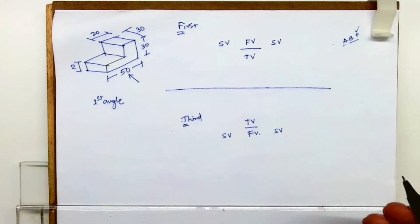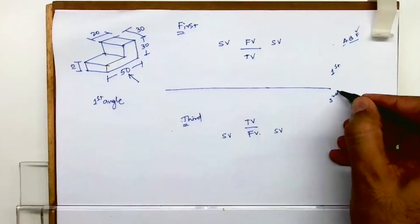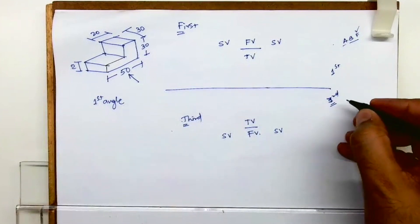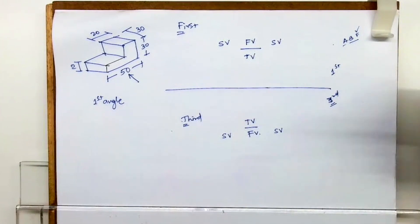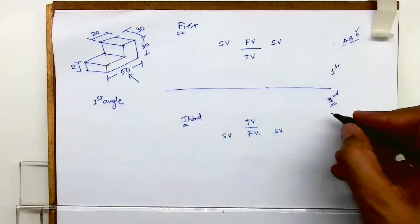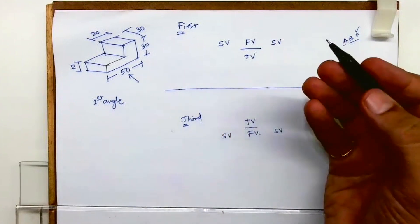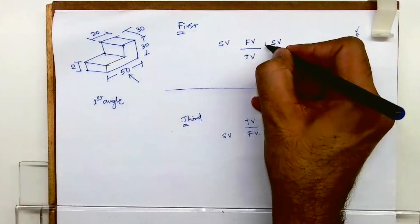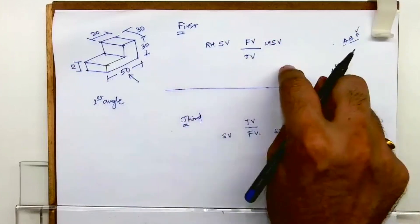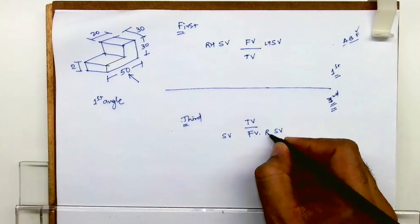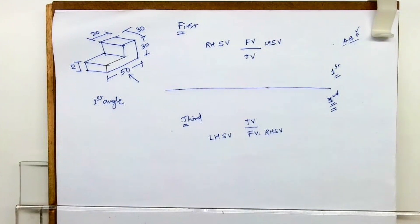Now for left-hand side view and right-hand side view — remember, if you're doing any activity for the first time versus the third time, you'll be more accurate in the third attempt. So going by the same logic: in first angle, the left-hand side view will be on the right-hand side, and the right-hand side view will be on the left — it's reversed, like a first attempt. But in third angle, the right-hand side view is on the right and the left-hand side view is on the left — accurate, like a third attempt.